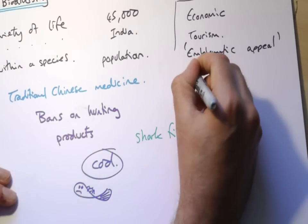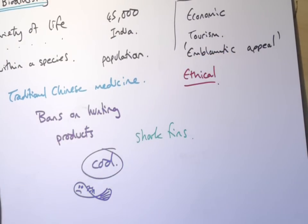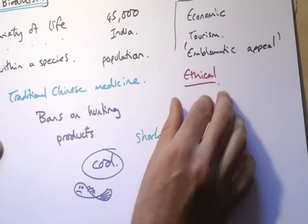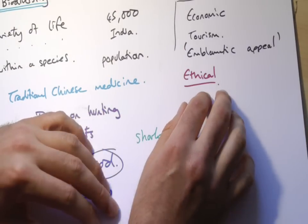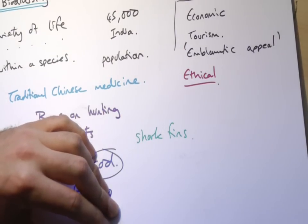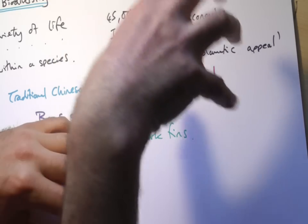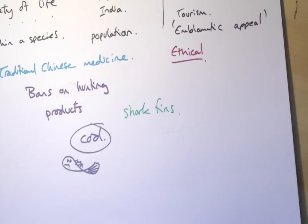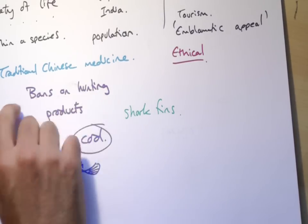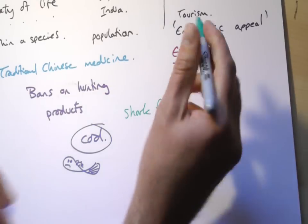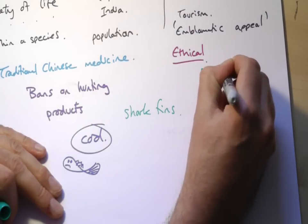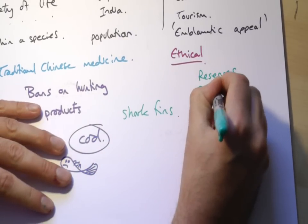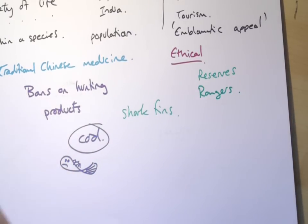And very importantly, of course, there are also ethical arguments. Some people would argue that we shouldn't be hunting animals at all. There's a big ethical issue about whether we have a responsibility as humans to not hunt species to extinction. So it's not just a case of it all being about money. We can protect them by banning products and also setting up reserves, which are areas that are protected — you can't build in them, perhaps can't live in them — with park rangers to make sure things aren't getting hunted or shot.